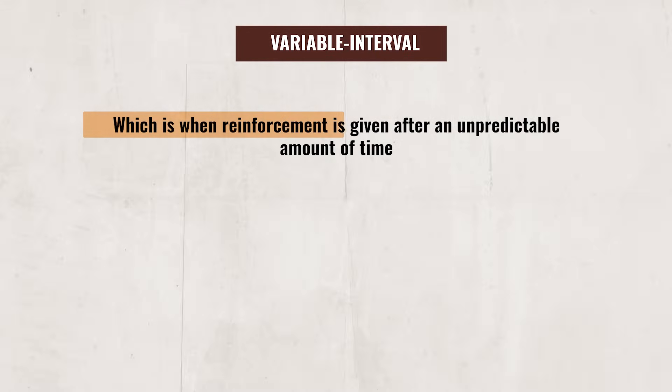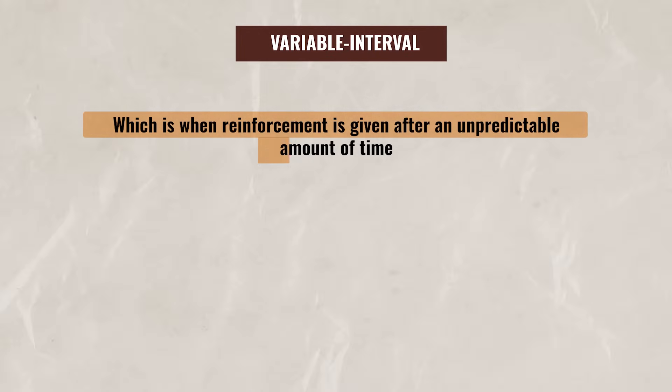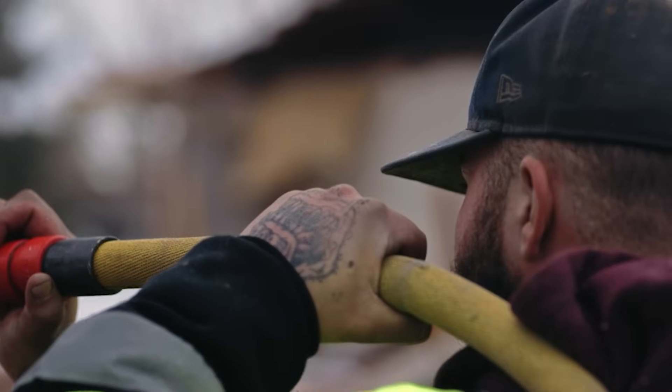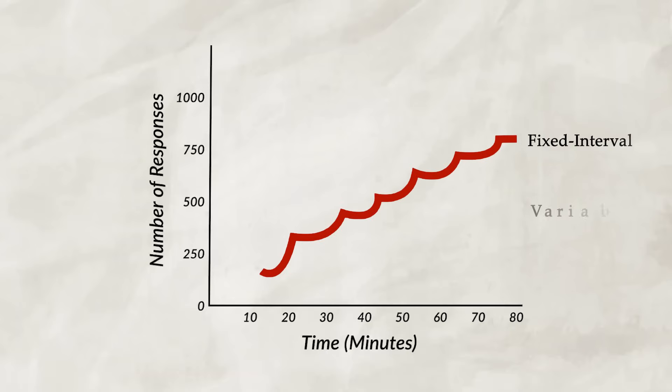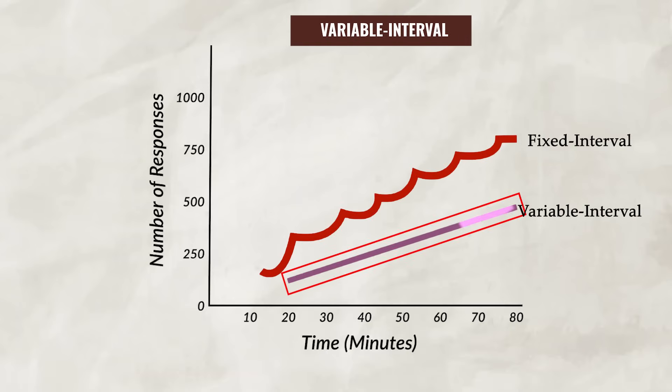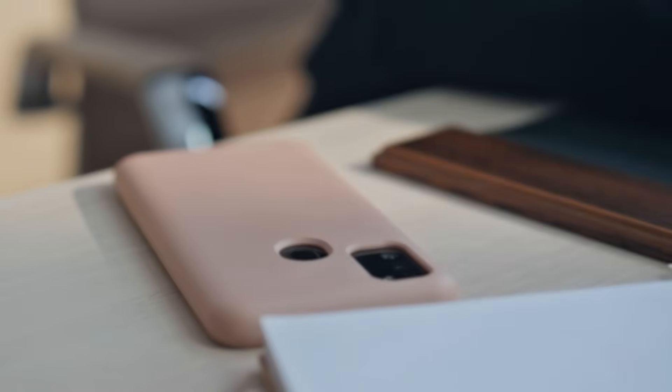The next type of partial reinforcement is variable interval, which is when reinforcement is given after an unpredictable amount of time. The individual has no idea when the reinforcement will be given. Variable interval often results in a steady and moderate response rate, but it also results in the slowest rate of responding, since the individual never knows when the next reward is coming. For example, you check your phone throughout the day since you never know when that special someone, who you just gave your number to, is actually going to text you — could be in 10 minutes, maybe an hour, or maybe they've already texted you.